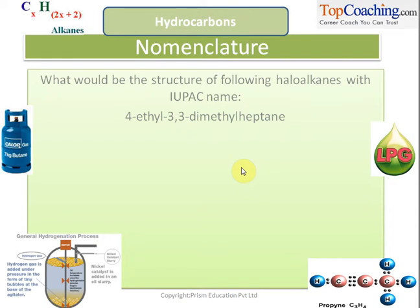In previous chapters we studied about IUPAC nomenclature. Now let us try to draw out the structure of an alkane whose IUPAC name is 4-ethyl-3,3-dimethylheptane.